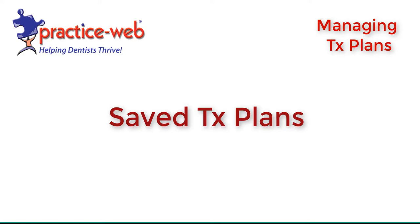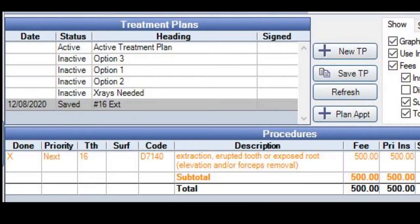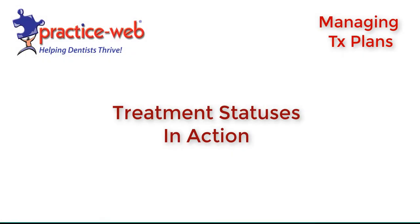Saved treatment plans: a patient can have many saved treatment plans. They serve as read-only versions of the treatment options presented to patients at the time of their appointment. Procedures completed and thus removed from an active treatment plan will still display on a saved treatment plan and be marked as done. Let's see how all three of these treatment plan statuses work in the software.